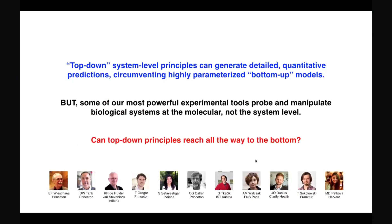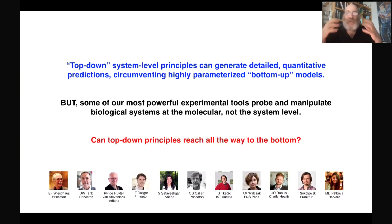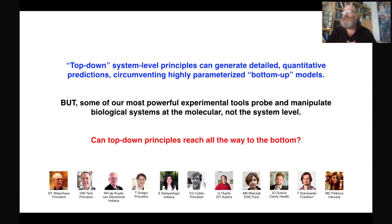I'm sorry that this was a bit rushed, but what I wanted to convince you of is that by injecting system-level principles — which in some sense are top-down as opposed to the reductionist bottom-up approach — we can get quantitative predictions which entirely go around the problem of knowing all of those 50 parameters. The problem with this is that our most powerful experimental tools are at the microscopic level, not the system level. So the challenge is now the inverse of where we started: rather than the hopeless task of going all the way from the bottom up to the full system-level macroscopic behavior, the question is whether we can use these top-down principles and get them to reach all the way down into the molecular details. Thank you.